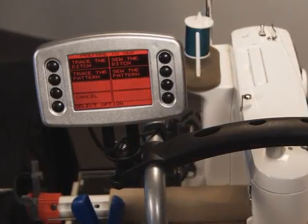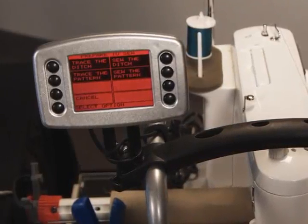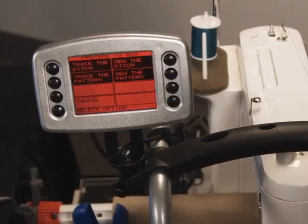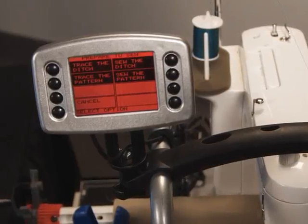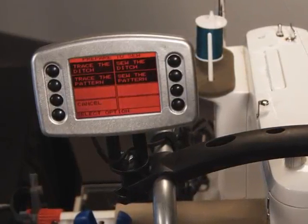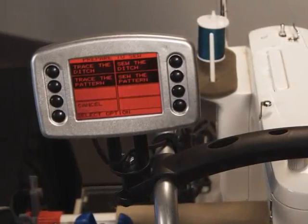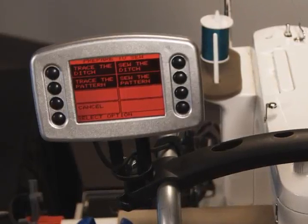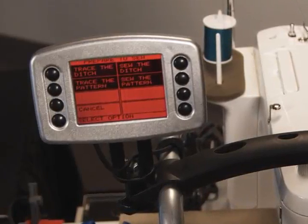On this screen you'll see the option of tracing the ditch and tracing the pattern as well as sewing the ditch and sewing the pattern. Tracing the ditch moves the machine along the ditch path without stitching. Trace pattern likewise moves the machine along the pattern path again without stitching. These options allow you to confirm that the ditch or the pattern are correctly placed before you sew.